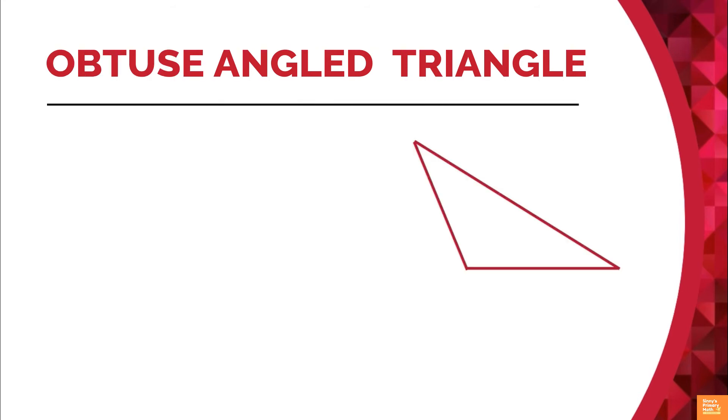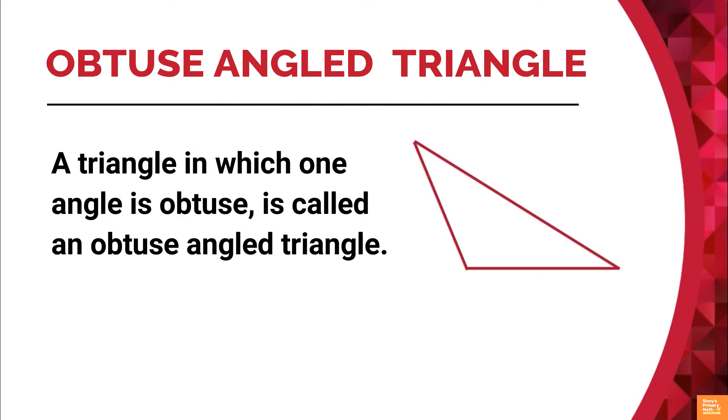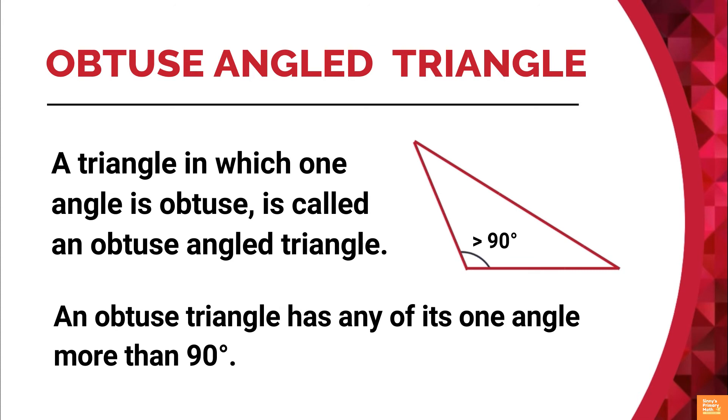Obtuse angle triangle: a triangle in which one angle is obtuse is called an obtuse angle triangle. An obtuse triangle has any of its one angle more than 90 degrees. Hence, the other two angles are acute.